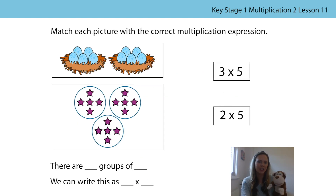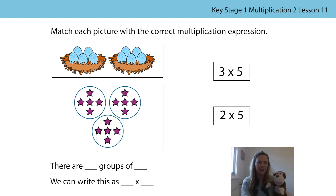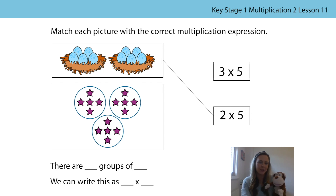Now it's your turn. Can you match each picture with the correct multiplication expression? Remember, you can use the stem sentences to help you. Pause the video whilst you have a think. Bongo and I are going to have a think too. In the first picture, Bongo thinks we can see two nests — two groups. There are five eggs in each nest, so there are two groups of five or two fives. We can write that as two times five. The two represents the number of nests and the five represents the number of eggs in each nest.